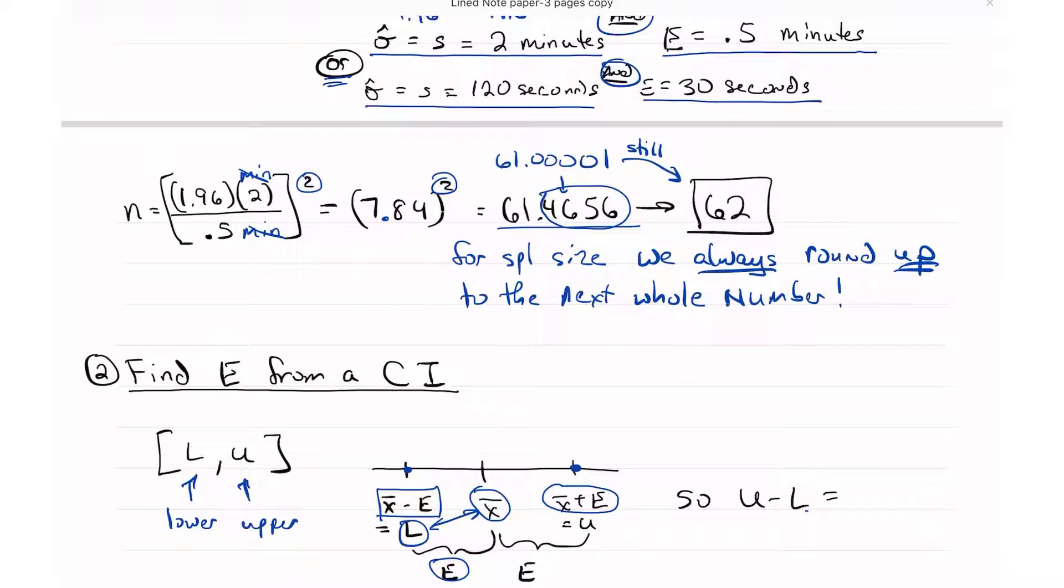Distance is always positive, so whether you take X bar minus L or L minus X bar, you'll either get negative E or positive E, and the distance is always going to be positive. Also note that E is always positive, so make sure that if you get the negative value, take the positive of it. If you choose the negative critical value instead of the positive, you're going to get a negative E. Make sure that it's positive.